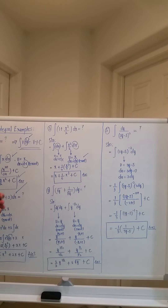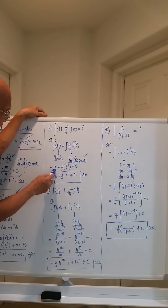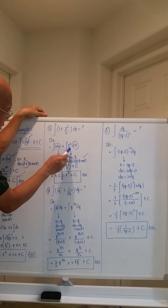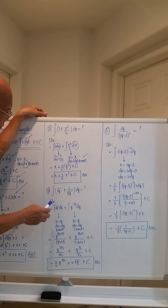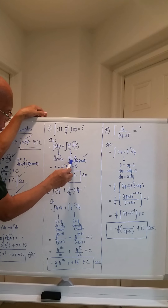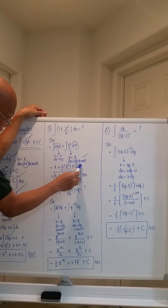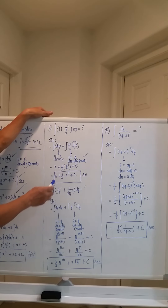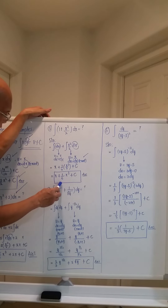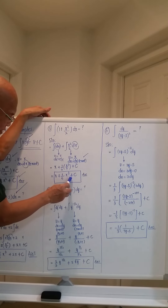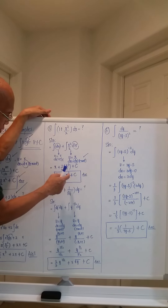Proceeding with the integration: the integral of dx is simply x. Bringing out the 1/2, the second term falls under the power formula — x raised to 2+1 over 2+1, which is x³/3. So we get x plus 1/2 times 1/3 times x³, which is 1/6 x³, plus C. The final answer is x + 1/6 x³ + C.